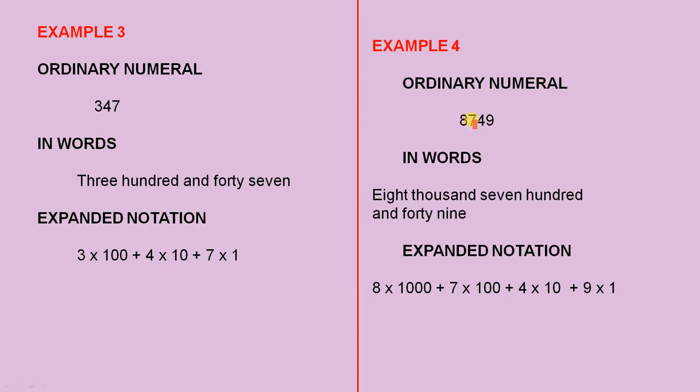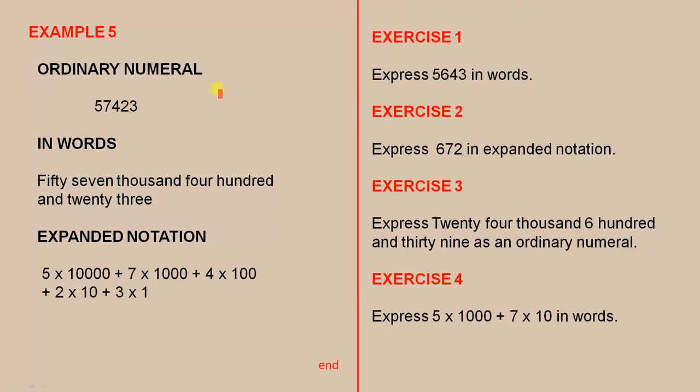The next example, 57,423. That's the ordinary numeral. Fifty-seven thousand, four hundred and twenty-three. In expanded notation, that's five times ten thousand, plus seven times a thousand, plus four times a hundred, plus two times ten, plus three times one.